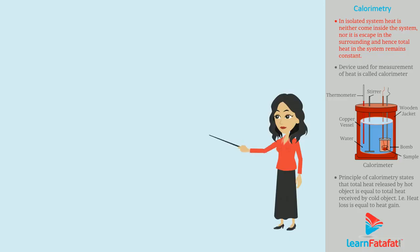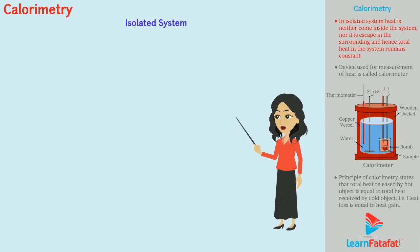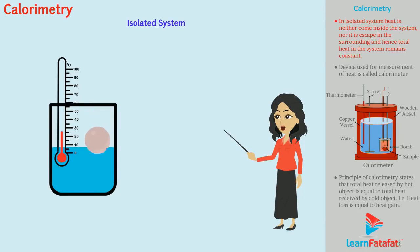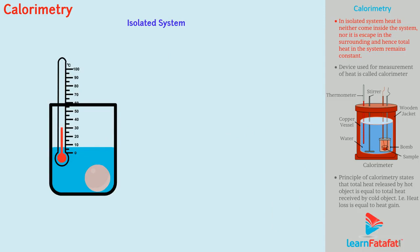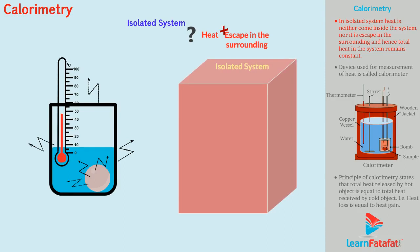Calorimetry. Let's start this discussion with the concept of isolated system. When a hot aluminium ball is inserted in water, what will happen? The temperature of water increases. In other words, heat is transferred from the aluminium ball to water. But during this action, some of the heat may escape into the surrounding. Can we make a system in which heat is not allowed to escape into the surrounding? Such a system is called an isolated system.